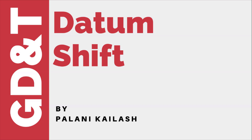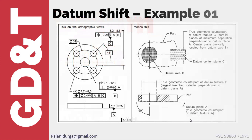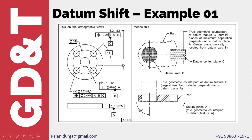In this video we are going to discuss datum shift. We take two examples. In the first example, you have a part with positional tolerance for a slot and there is no maximum material boundary modifier for datum B. Datum B is nothing but the center hole, so this is a regardless of material boundary example.